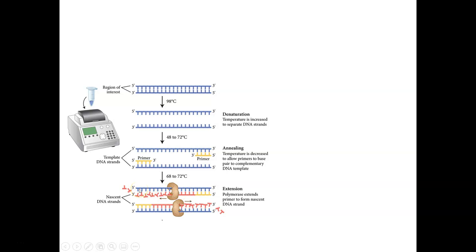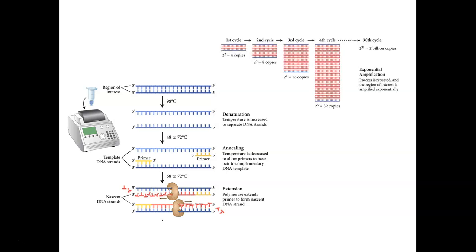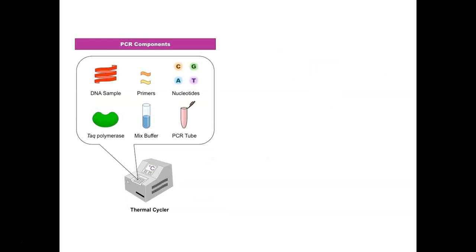DNA polymerase uses individual dNTPs as building blocks of DNA — that's dATP (deoxyadenosine triphosphate), dTTP (deoxythymidine triphosphate), etc. — to build a new strand of DNA. Then the process repeats: we heat those two molecules up, they separate into four single strands, we cool them down so primers can come in, and DNA polymerase makes new DNA on those strands. With each subsequent cycle, we double the copies of DNA — from 4 to 8 to 16 to 32. If we get up to 30 cycles, we can get all the way to 2 billion copies.